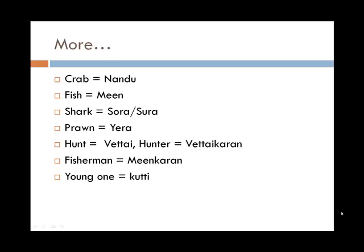Hunt generally refers to weitai, and hunter is weitai karan. Fisherman is mean karan. And young one generally refers to kutti.